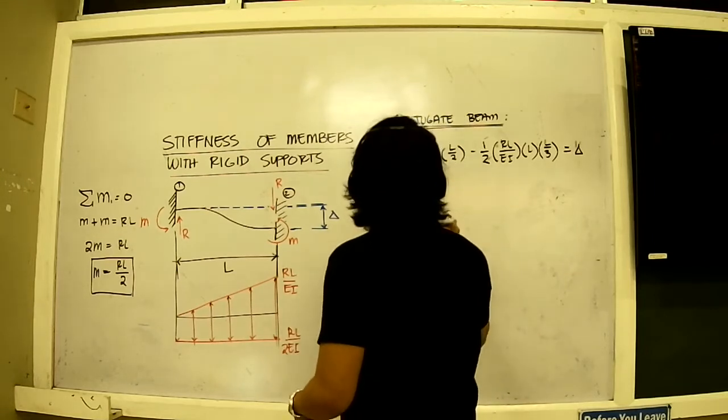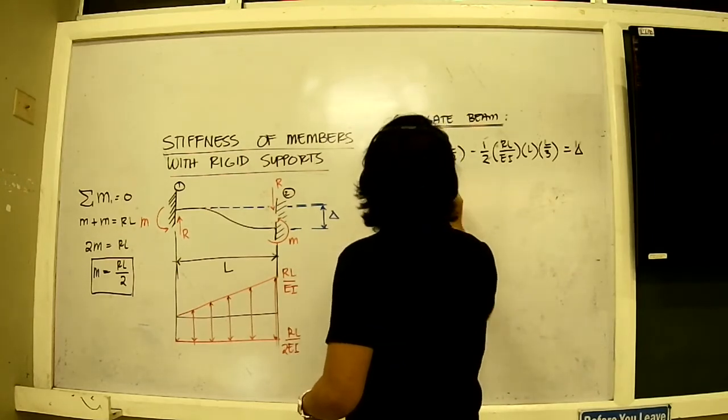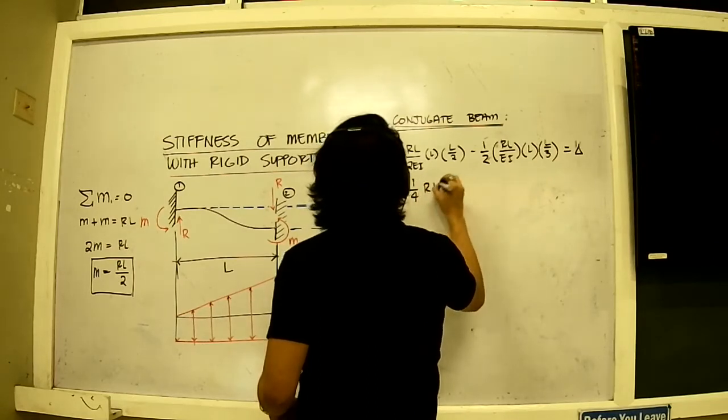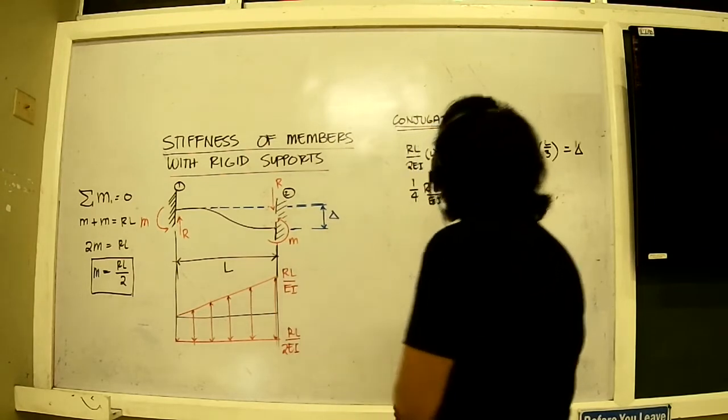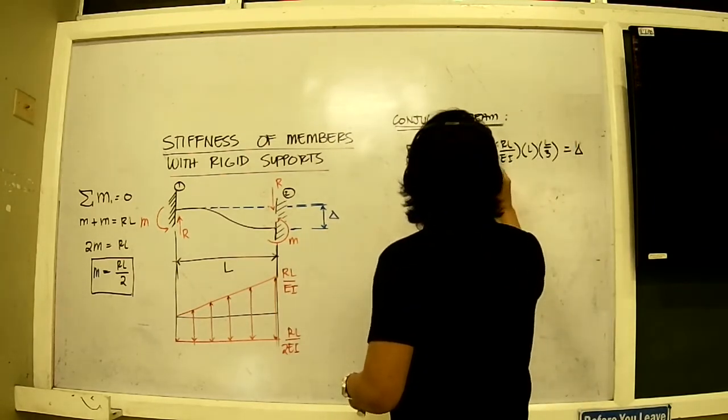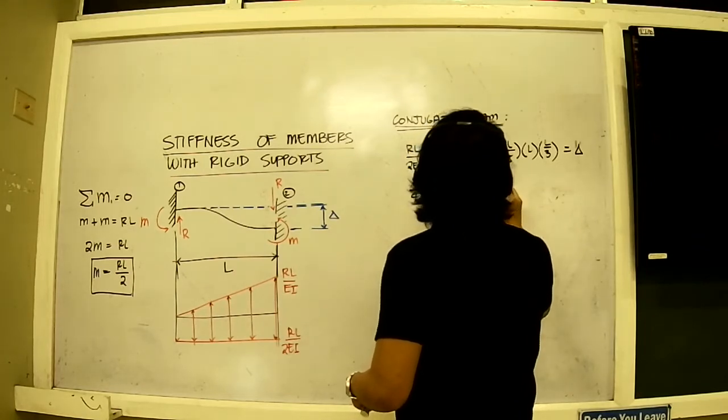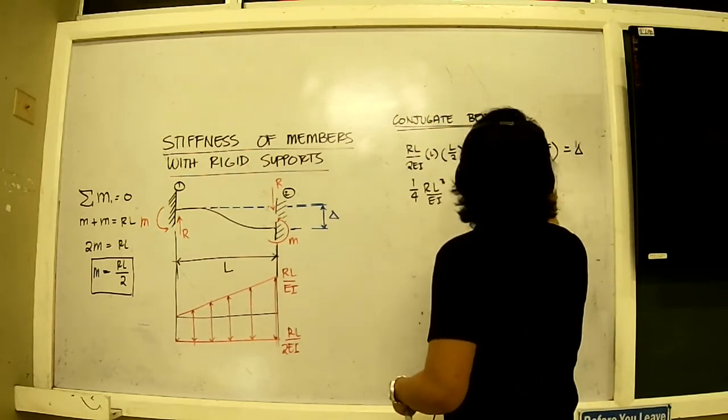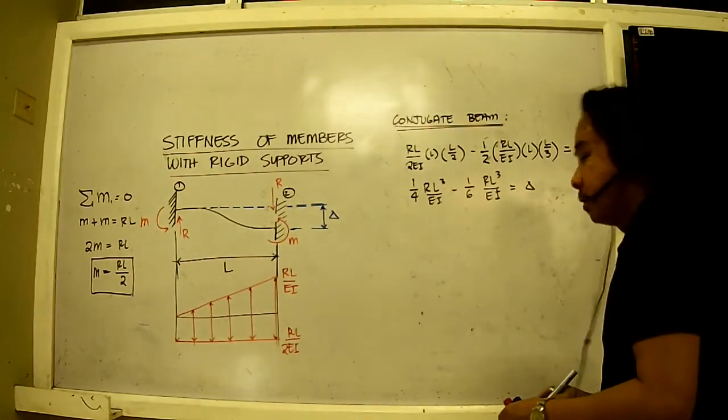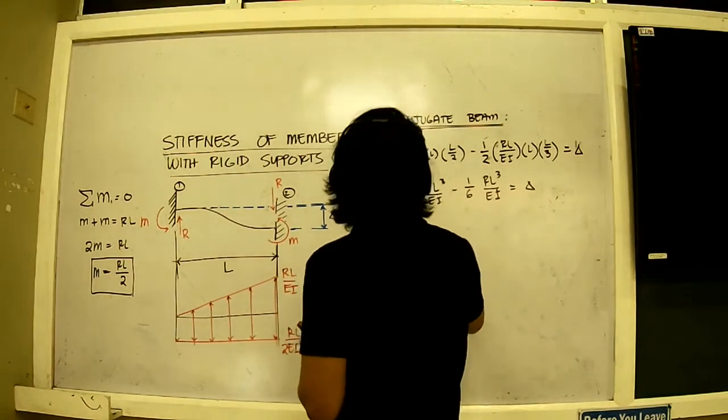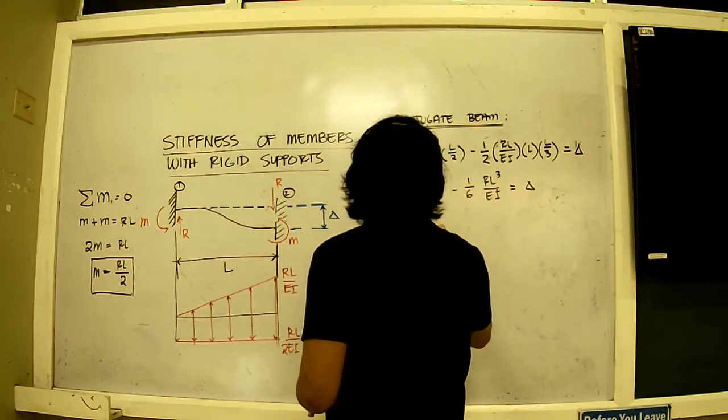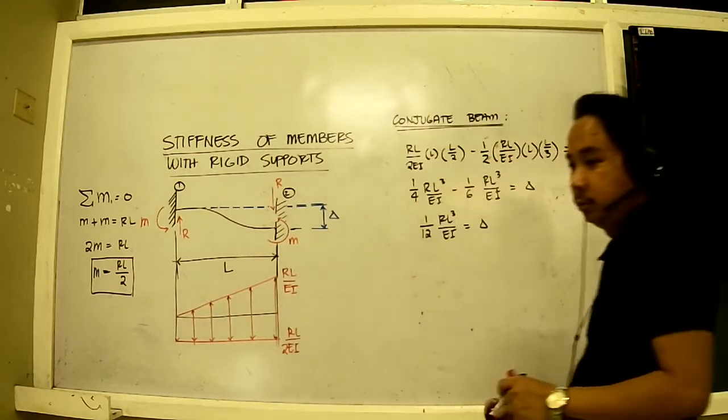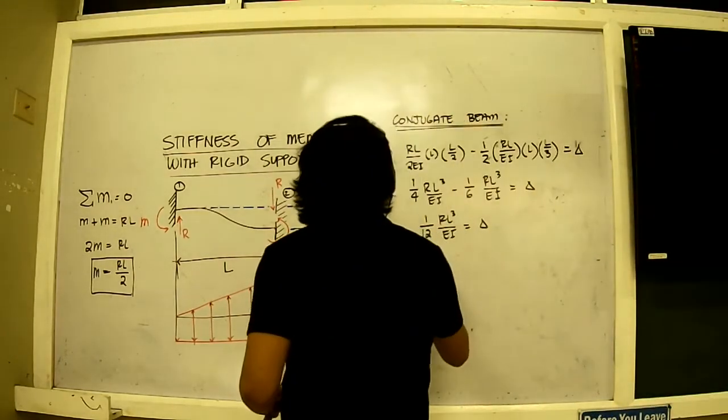So this is L over 4. This is one-fourth R L cubed over EI minus one-half, one-half times 3, that is 6, EI. We have this expression. Now solving for this, I will have one-fourth minus one-sixth, that should be equal to one over 12 R L cubed over EI is equal to delta. Now simplifying this, I will have that R is equal to 12 EI delta divided by L cubed. So I have an expression for R.